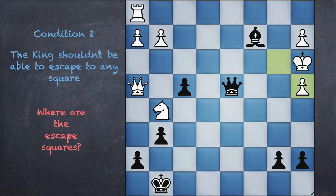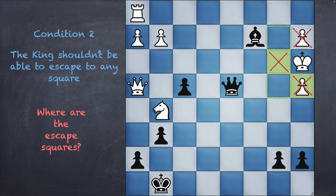Next let's look at condition two: where would the king escape to? We know that he can't capture his own pawn, so those two squares are out. He can't come to the square in front of him because the bishop is controlling it. The two squares he can actually escape to are the diagonal dark squares.